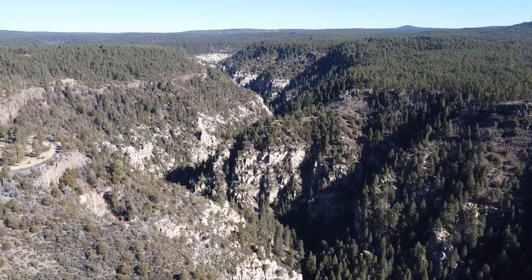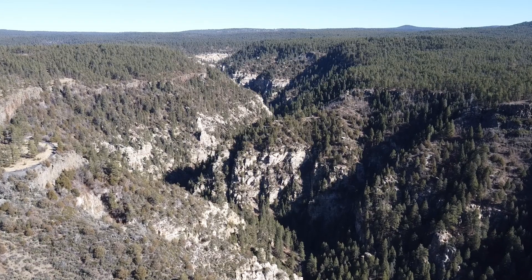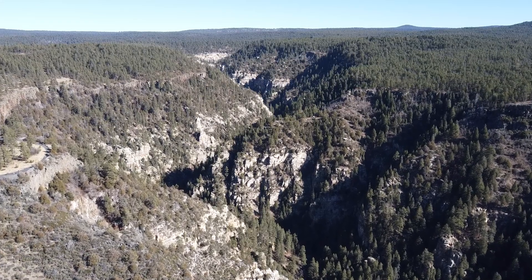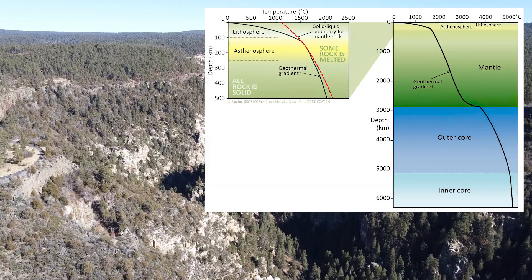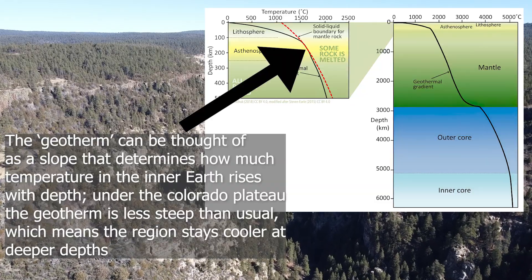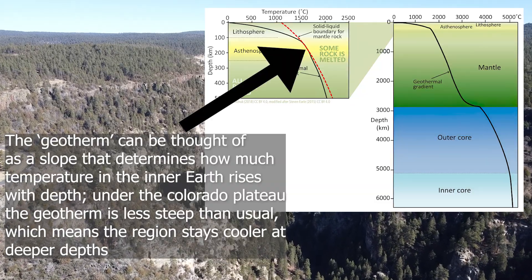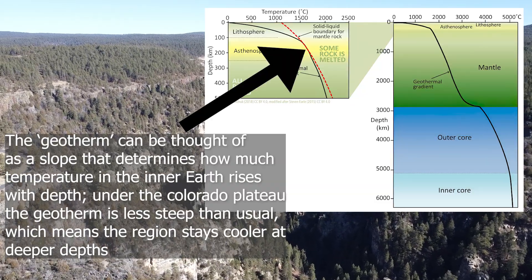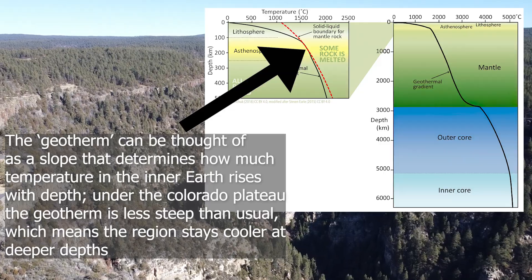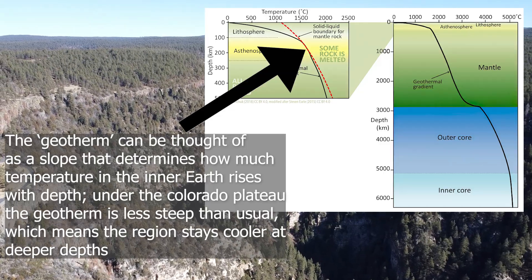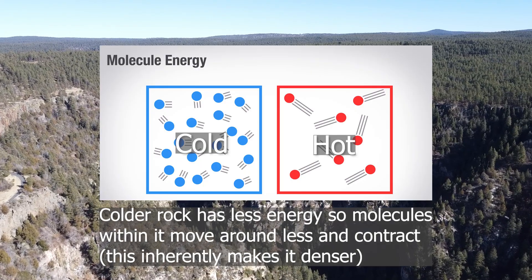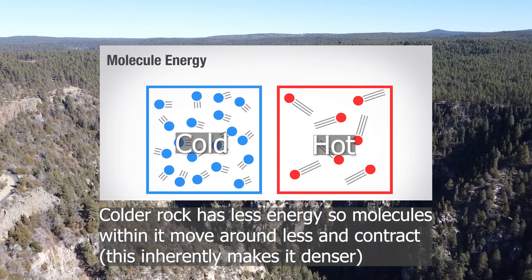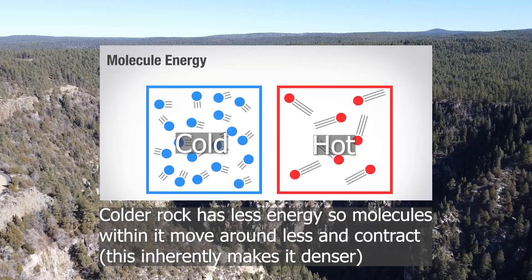But what does tectonically stable mean? Here are a couple of the things that make the Colorado Plateau tectonically stable. The region has a cool geotherm, meaning the rock in the inner crust and upper mantle below the Colorado Plateau is relatively cool. Cooler rock means harder, more solid, and more dense.